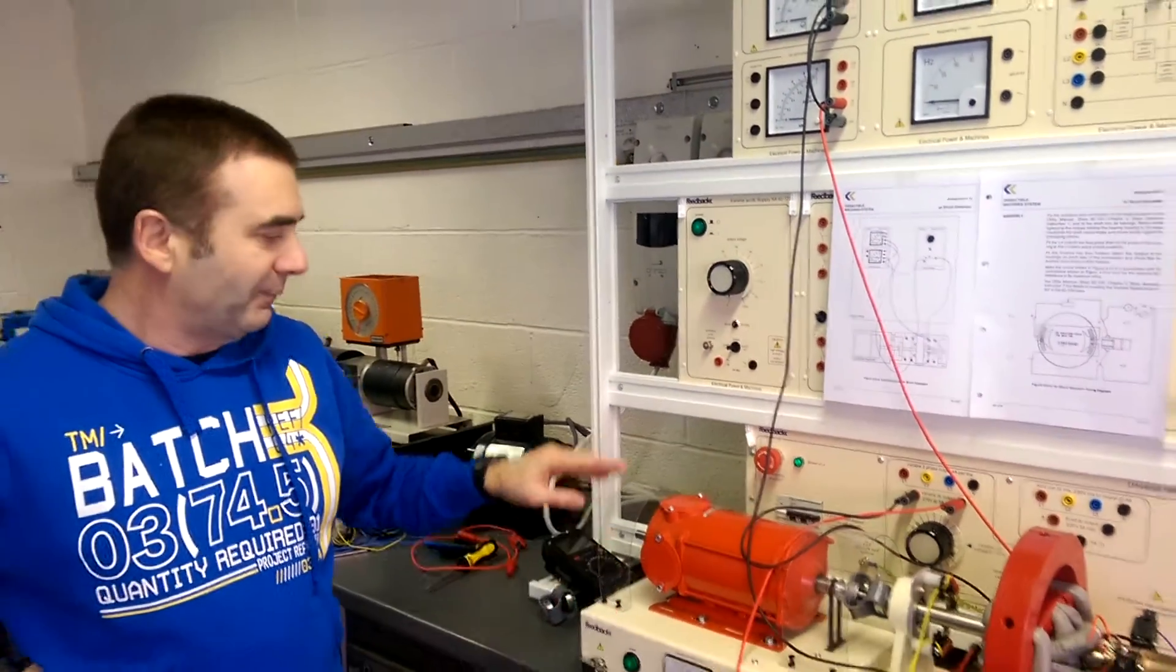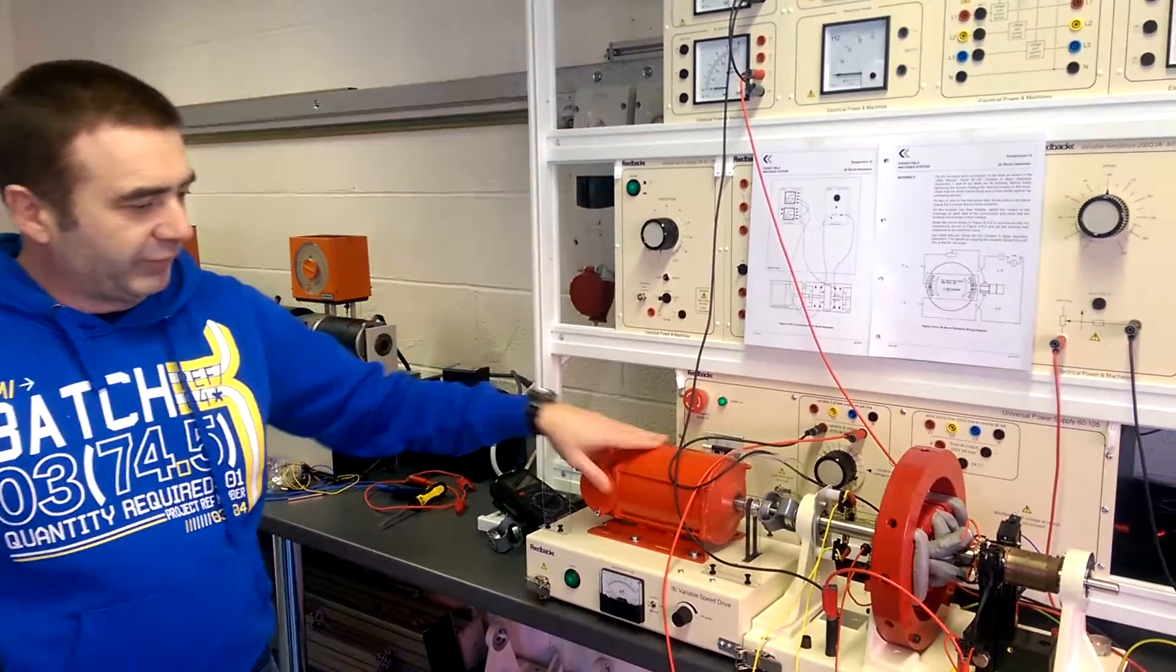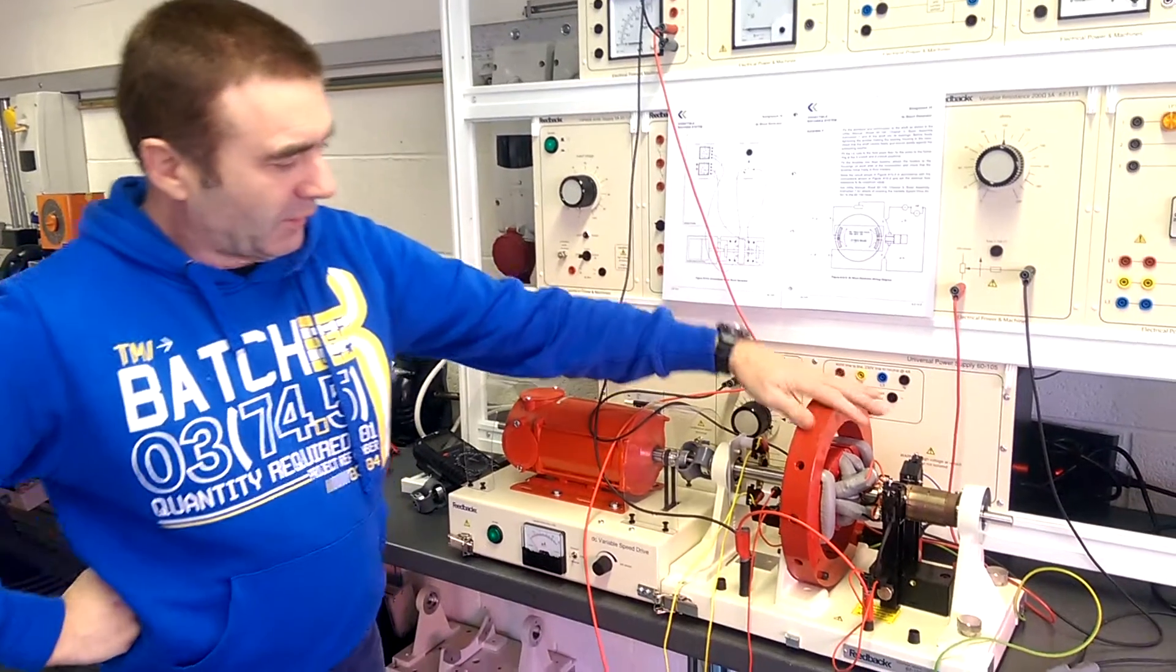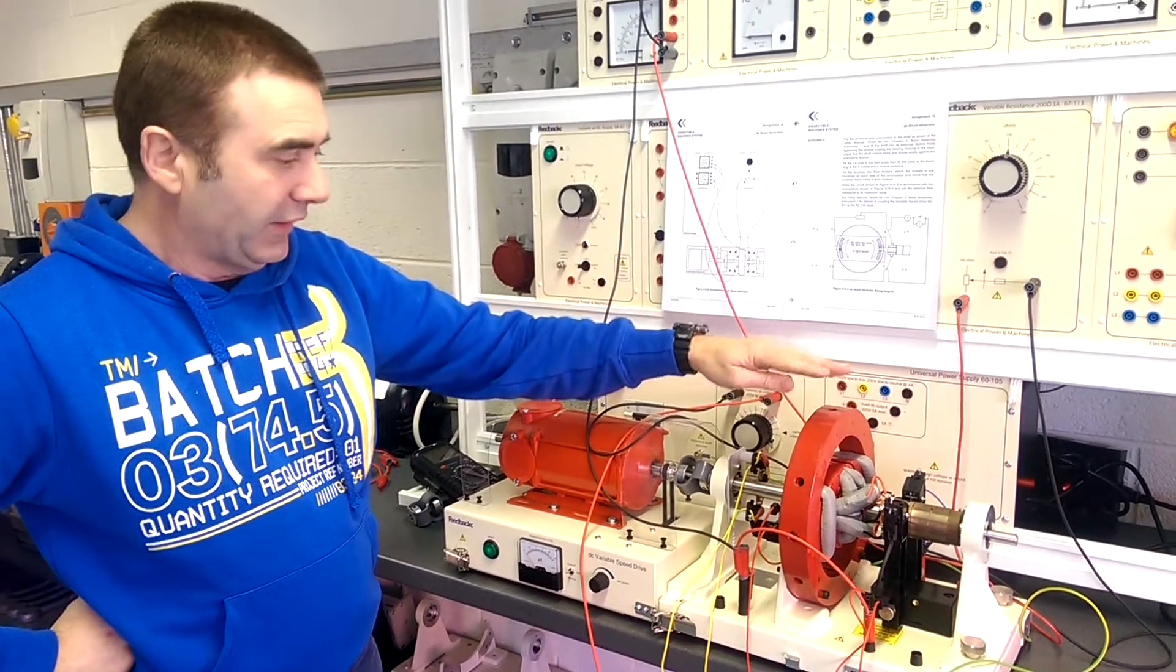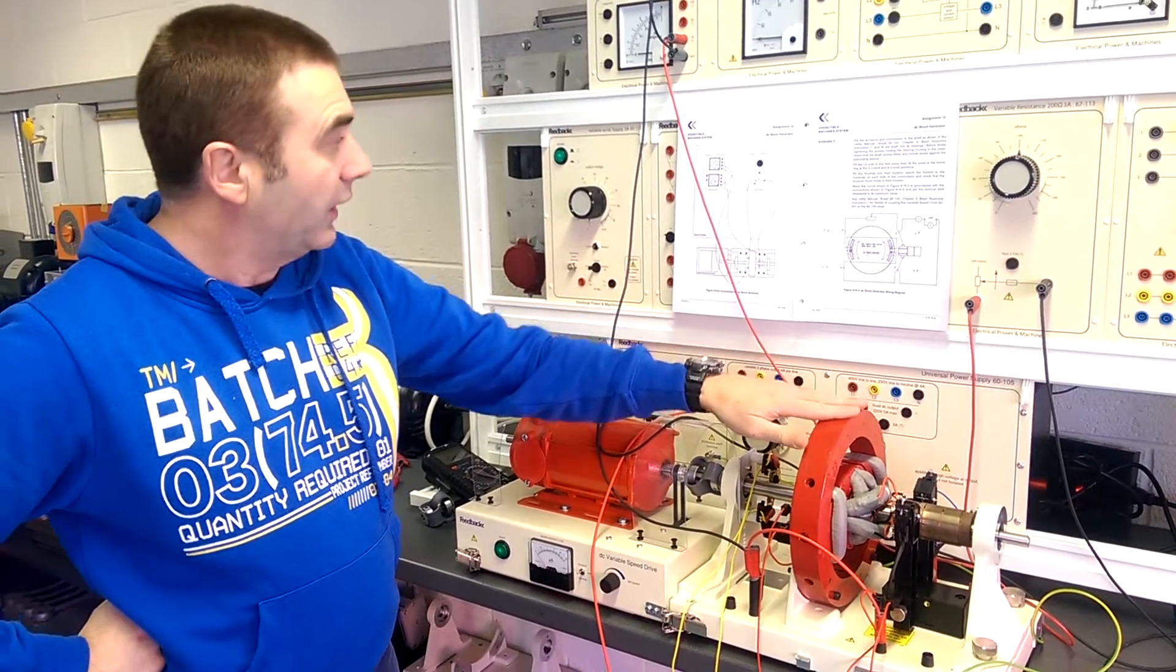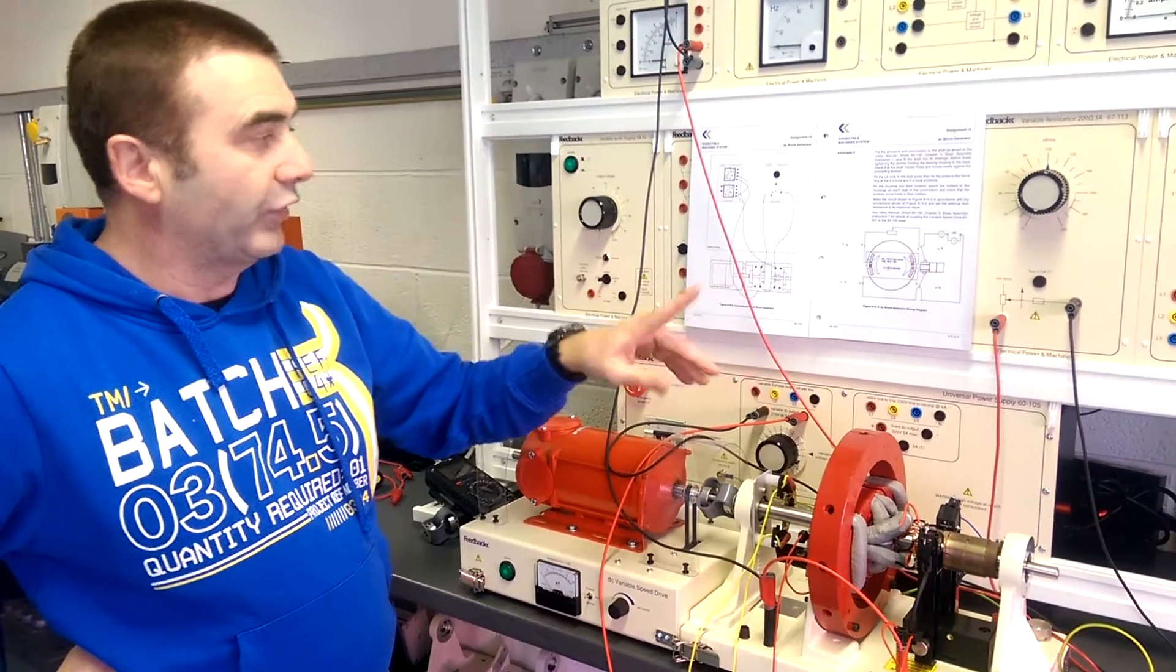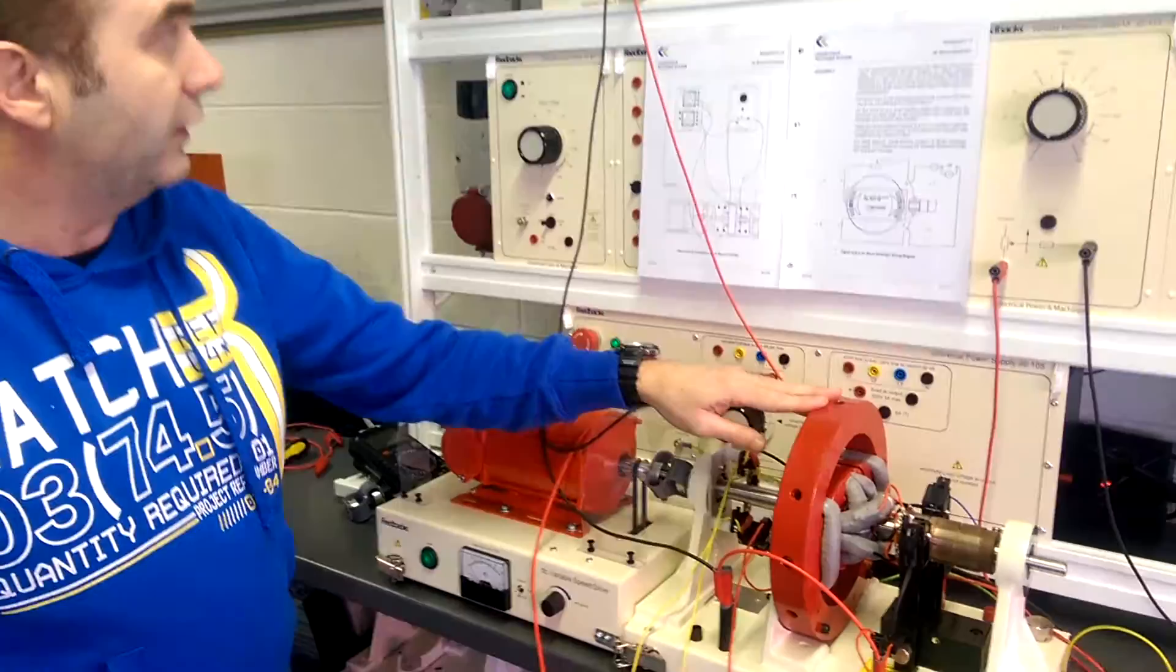What we've got here is a variable speed drive connected to our DC machine, which we have now changed over to run as a generator. It's a shunt generator, and what we're going to do is have it on a separately excited load.